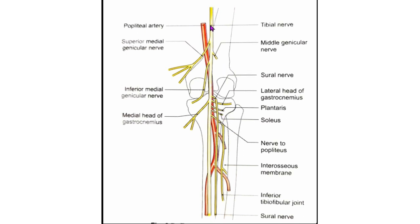Regarding the clinical anatomy of the tibial nerve: damage to the tibial nerve causes motor and sensory loss. Motor loss includes the superficial and deep muscles of the calf and the intrinsic muscles of the sole. Sensory loss includes loss of sensation on the whole of the sole of the foot, the plantar aspect of the digits and nail beds on the dorsum of the foot.